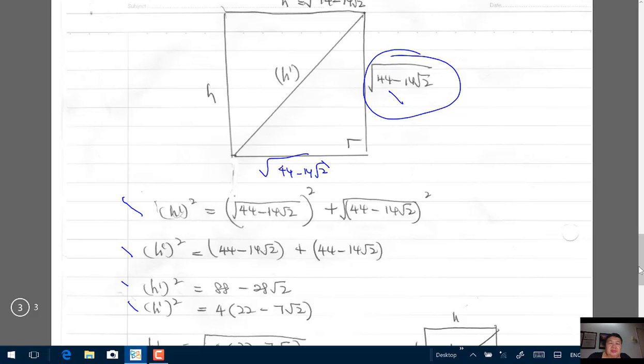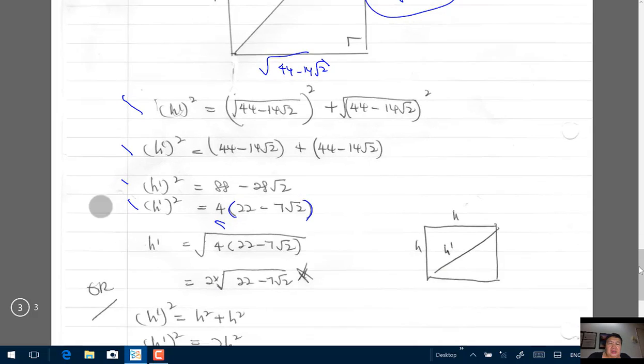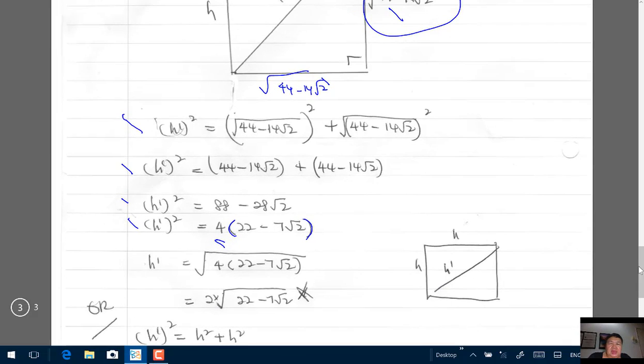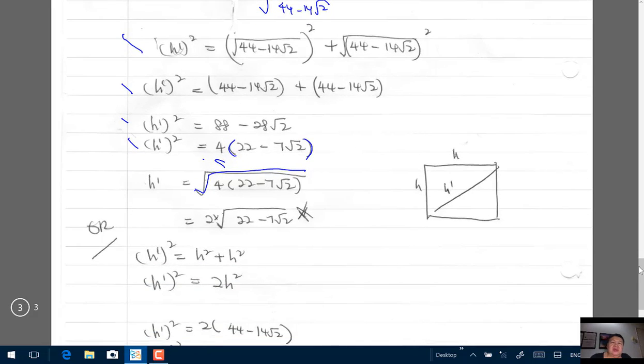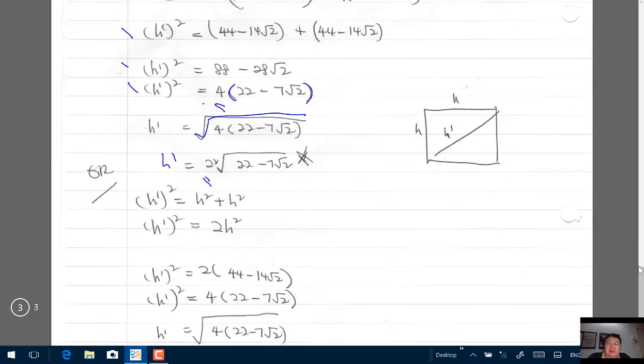From both I took out common factor 4 to get 4 times 22 minus 7 root 2. So this hypotenuse h1 will be square root of 4 bracket 22 minus 7 root 2. Square root of 4 is 2, so the final answer for the hypotenuse h is 2 times square root of 22 minus 7 root 2.